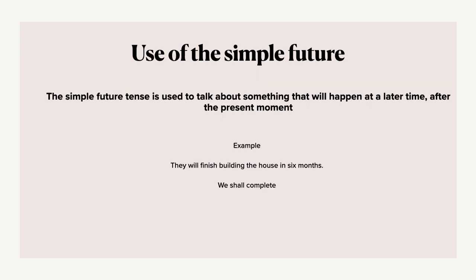We use simple future to describe something that will happen at a later time after the present moment. For example, they will finish building the house in six months — meaning they are not going to complete construction today; they may take one, two, up to six months. We shall complete the work — maybe today evening, tomorrow morning, or next week — we are not sure of the time, but we shall complete it. Therefore, whatever action is done in the future, it refers to simple future.